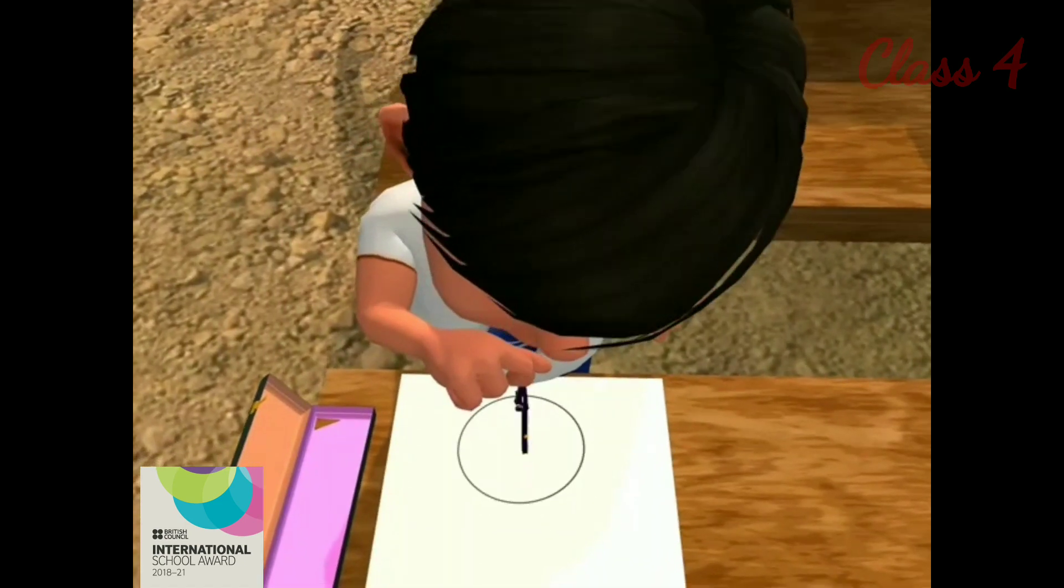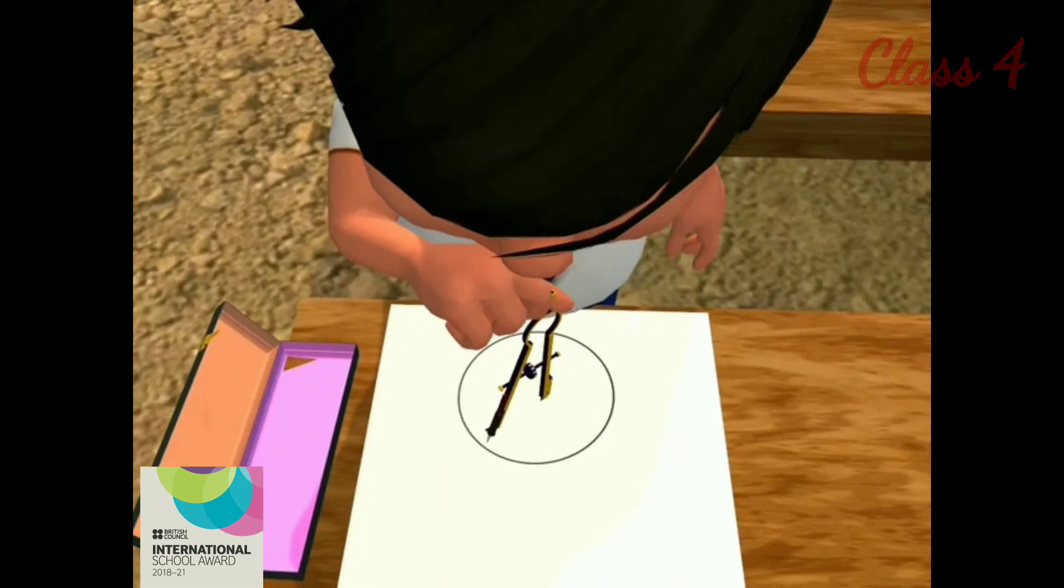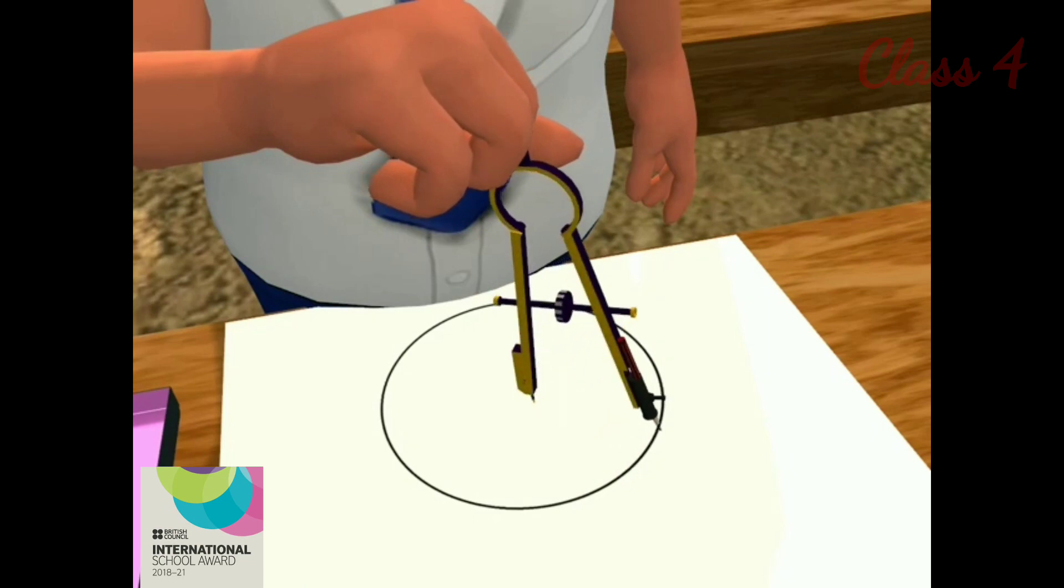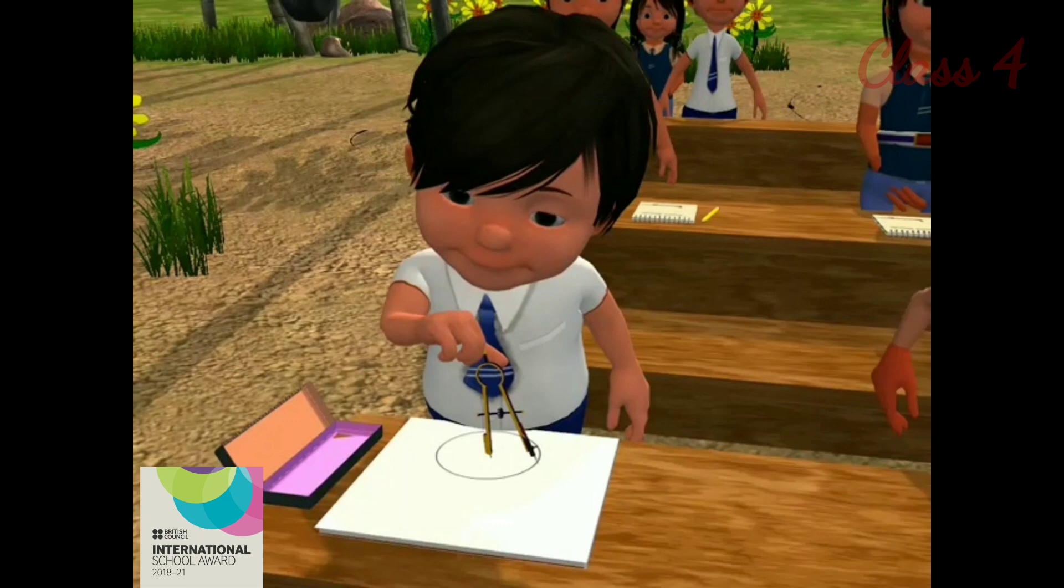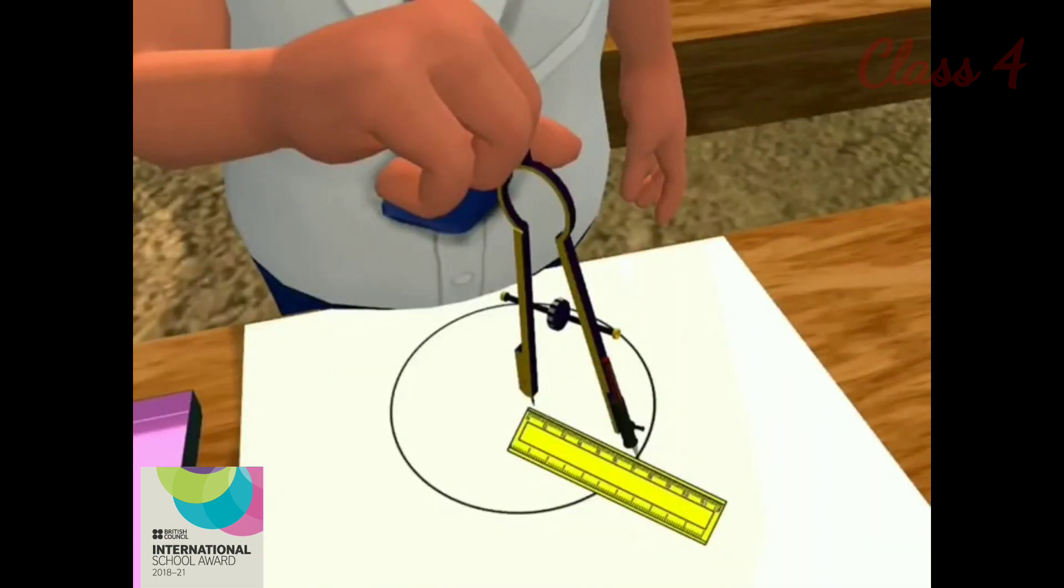Now keep the needle of the compass fixed at a point and this is the center of the circle. Now hold the top of the compass and move the pencil around the needle, but keep the needle fixed. This way we get the circle whose radius is 6 cm.